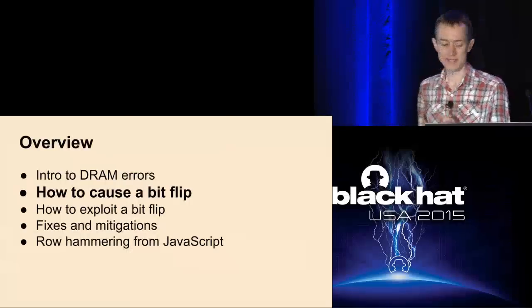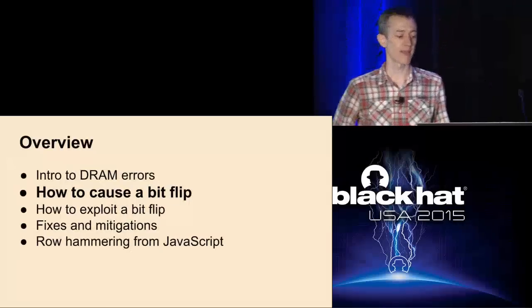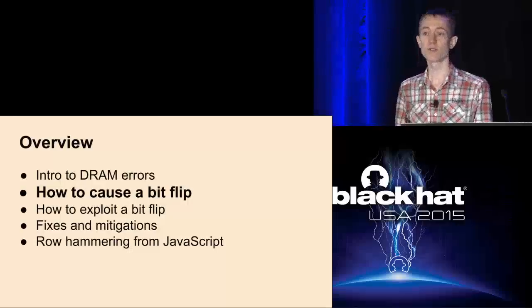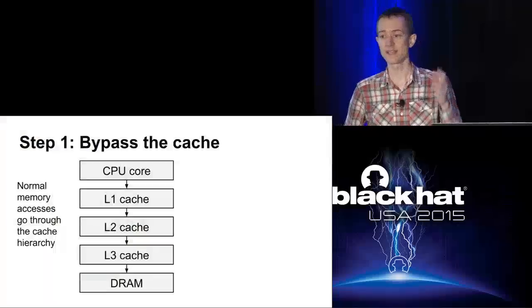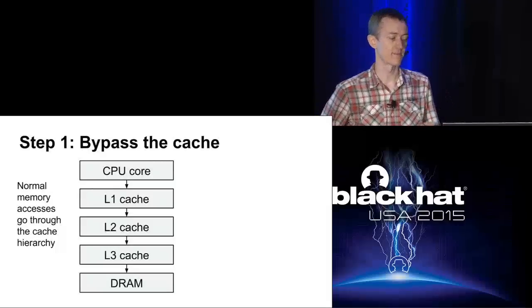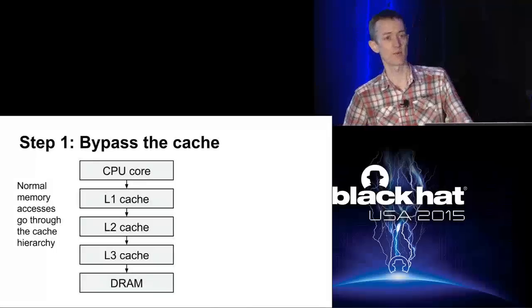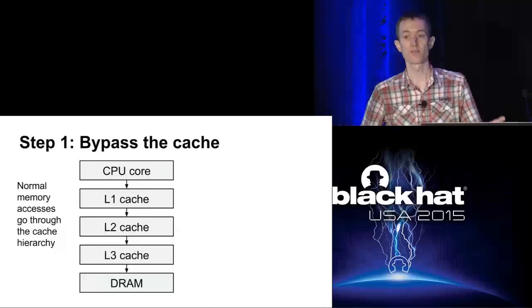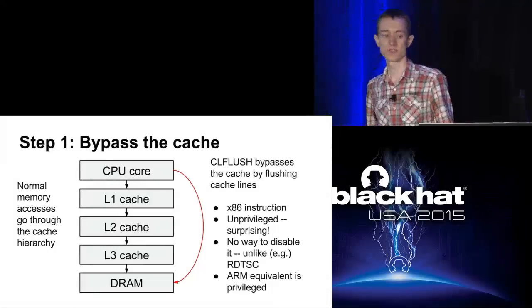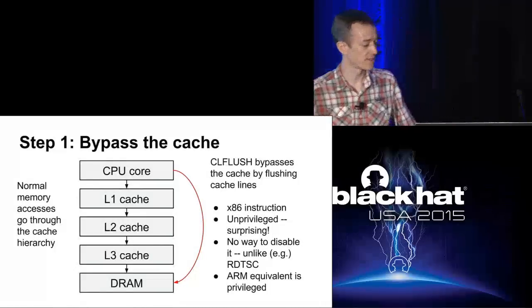Now I'll talk about how you can cause row hammering from software - something the CMU paper explained. The basic problem is how to cause repeated activations of a row. There are basically two requirements. First, you have to cause accesses to the underlying DRAM - you can't just do normal memory accesses to the same location repeatedly, because those will get served from the cache. So you have to find a way to bypass the cache. On an x86 machine, the simplest way is to use the CLFLUSH instruction, which flushes a cache line. Interestingly, CLFLUSH is an unprivileged instruction, so any process can use it, and it actually can't be disabled.